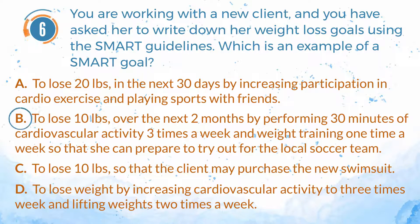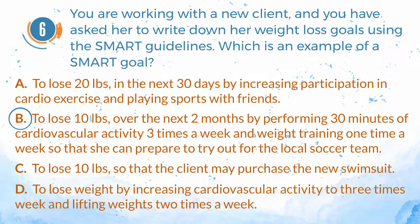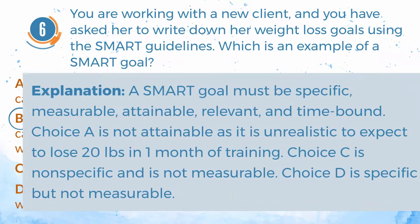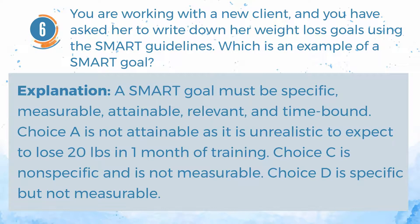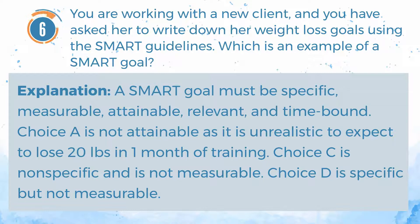The answer is B — to lose 10 pounds over the next two months by performing 30 minutes of cardiovascular activity three times a week and weight training one time a week so that she can prepare to try out for the local soccer team. A SMART goal must be specific, measurable, attainable, relevant, and time-bound. Choice A is not attainable as it is unrealistic to expect to lose 20 pounds in one month. Choice C is non-specific and not measurable. Choice D is specific but not measurable.